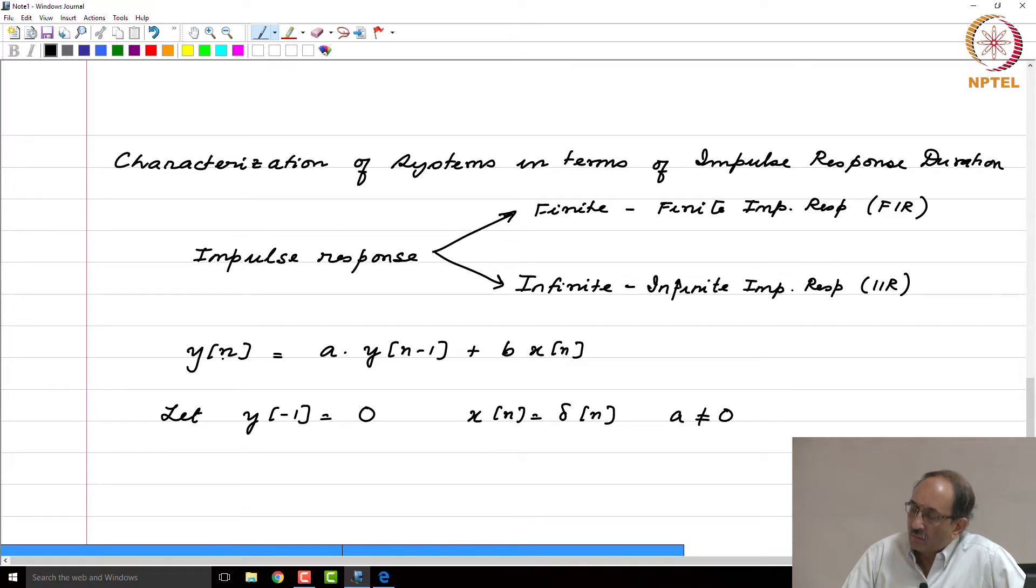All you need to do is start evaluating y for various indices. For example, if you look at y(0), this is A*y(-1) + B*x(0). And y(-1) is 0 as per this assumption and x(0) for this given input is 1. Therefore, y(0) is very simply B.